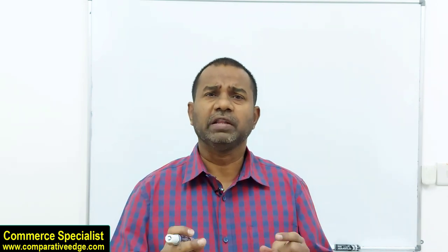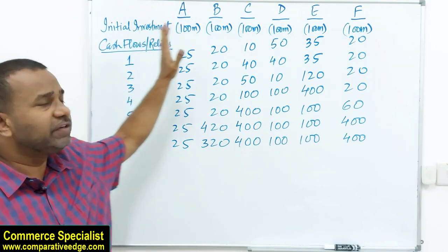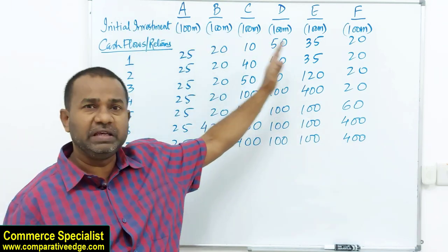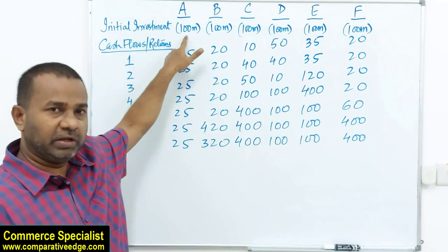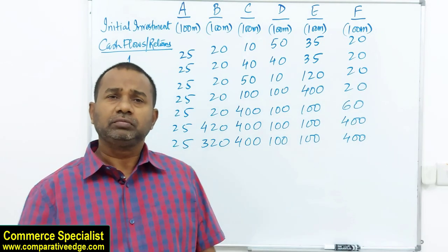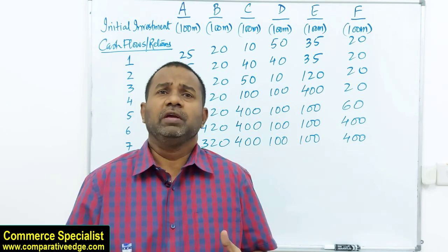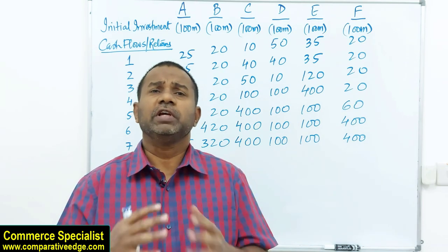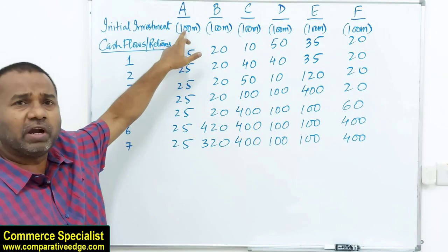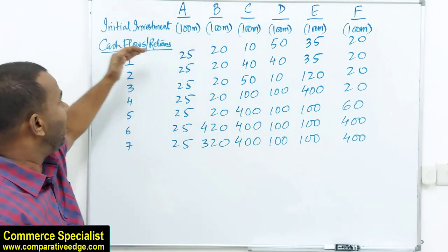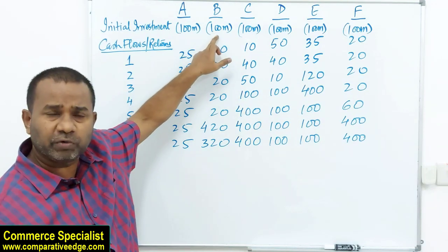Let's look at the very first technique: the payback period. I have six different projects — A, B, C, D, E, and F. The initial investment for all six projects is 100 million. We need to decide which investment to go for. If you invest 100 million in project A, every year it gives a return of 25 million. Project B gives 20 million for the first five years, then 420 and 320 million.